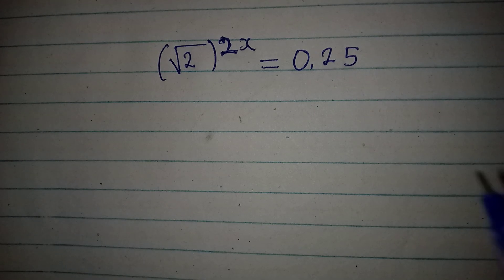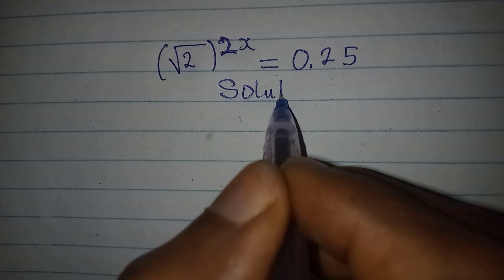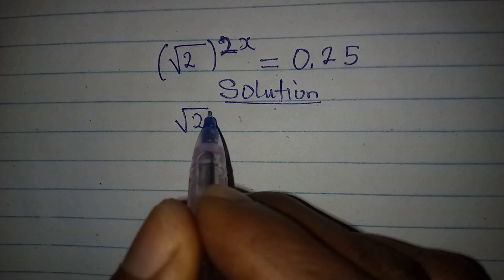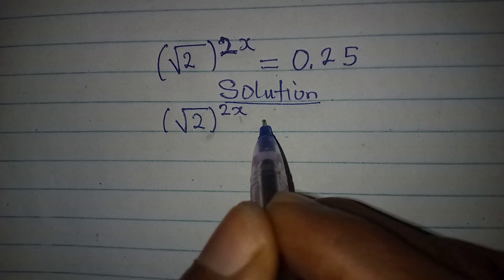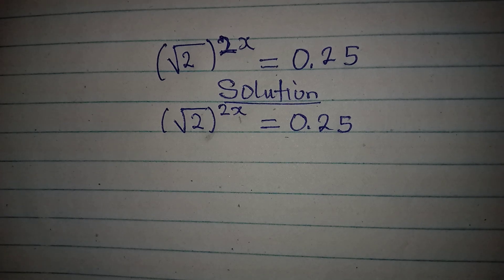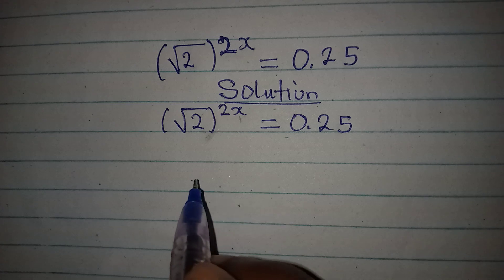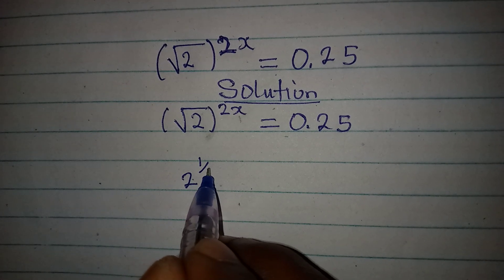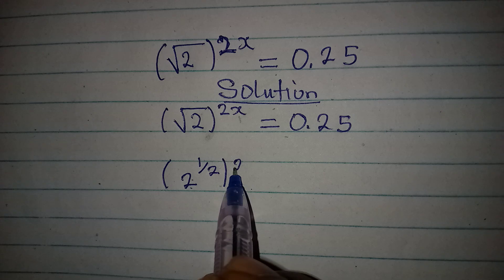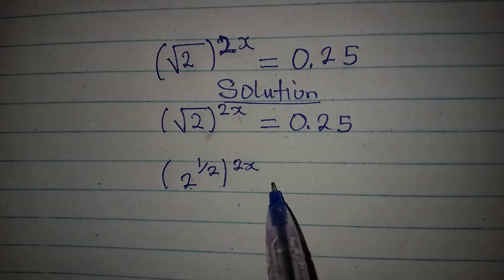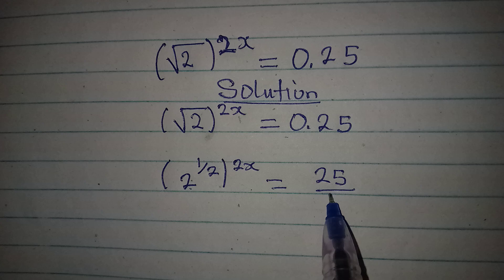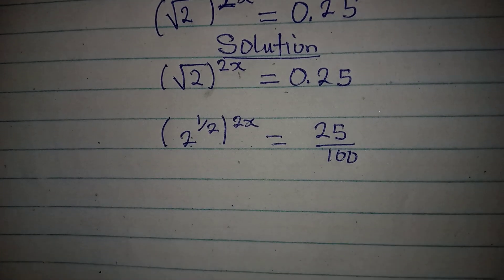Let's solve this problem. We have the square root of 2 to the power of 2x equal to 0.25. Now, the square root of 2 is the same thing as 2 to the power of 1 over 2, so this is 2 to the power of 1/2, and then the power 2x will still appear. This is equal to 0.25, which is the same as 25 divided by 100.